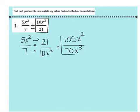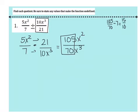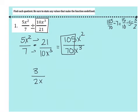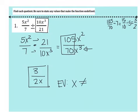We need to simplify. If I do 105 divided by 70, I get a decimal, so I'll do some scratch work. A 7 goes into both, giving me 15 over 10. Both of those can be divided by 5, giving me 3 over 2, which I can't reduce anymore. Now when we divide we subtract the powers: bigger minus smaller, 3 minus 2 is 1, and the bigger is on the bottom, so x is on the bottom. My answer is 3 over 2x. For EVs, looking back at the problem I have an x in the denominator, so x cannot be 0.